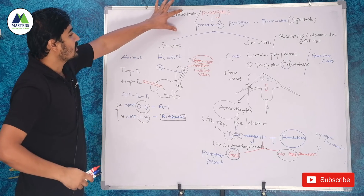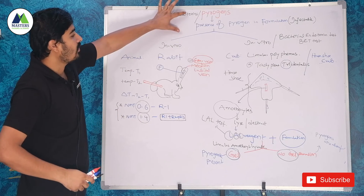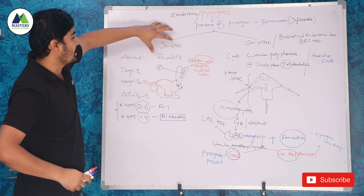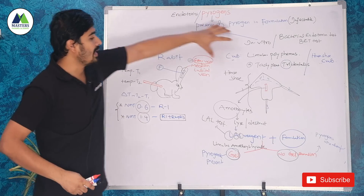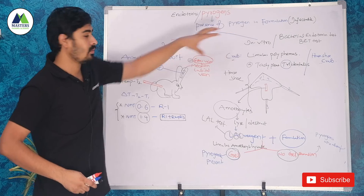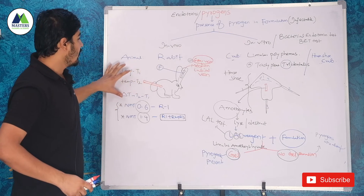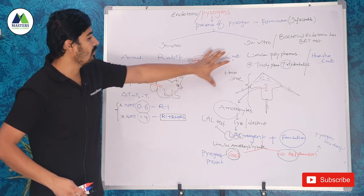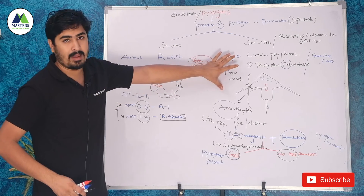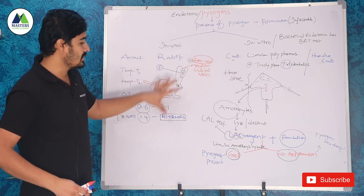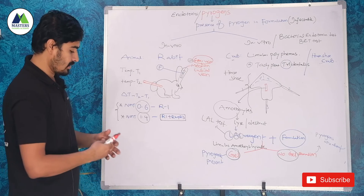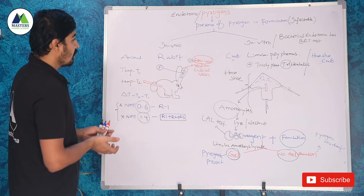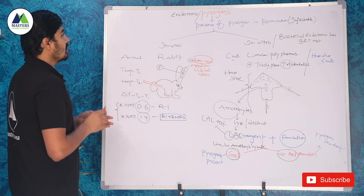In summary, to detect pyrogens in parenteral formulations, we use in vivo test with rabbit and in vitro test with the horseshoe crab. This covers the explanation of pyrogen detection.